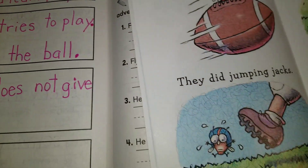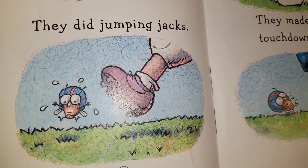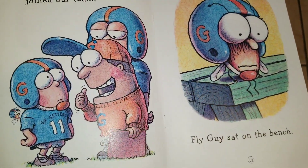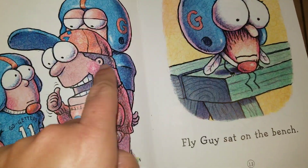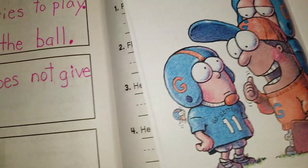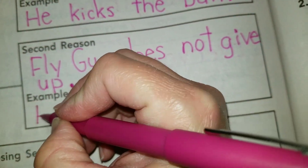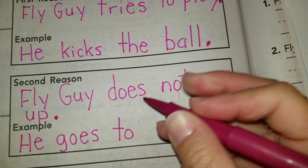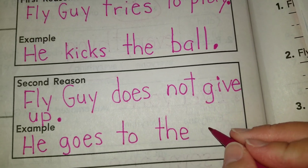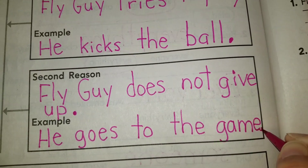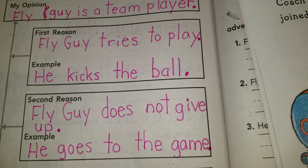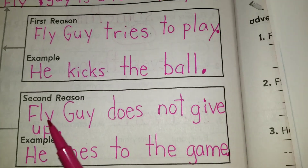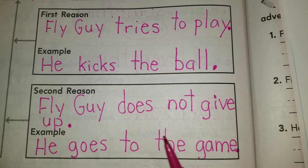And one example of Fly Guy not giving up — I think the biggest example — is that he goes to the big game. He is ready to play; it's just that the coach says, 'I got a new big player — the little guy is going to sit.' But even though the coach tells him he has to sit, he's still there. He doesn't give up. So an example is: he goes to the game. Don't forget to put a period at the end of your sentence.